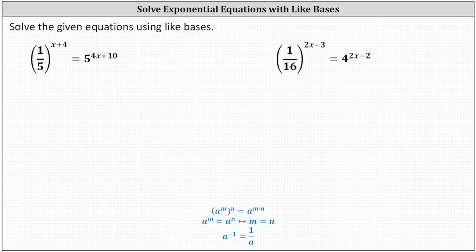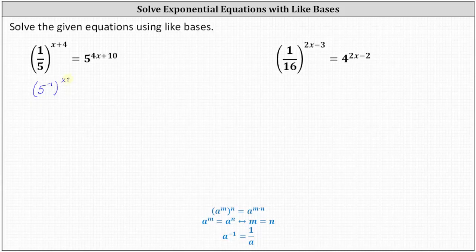For the first example, we have one-fifth raised to the power of x plus four, equals five raised to the power of four x plus ten. Using the negative exponent property, a to the power of negative one equals one divided by a, we can write one-fifth as five to the power of negative one. This allows us to write the left side as five to the power of negative one, raised to the power of x plus four, equals five to the power of four x plus ten.